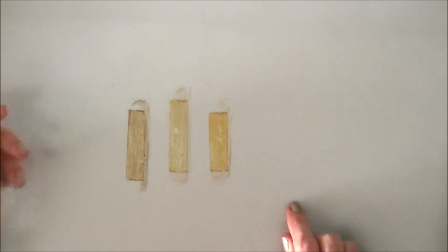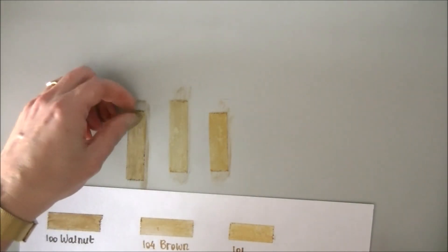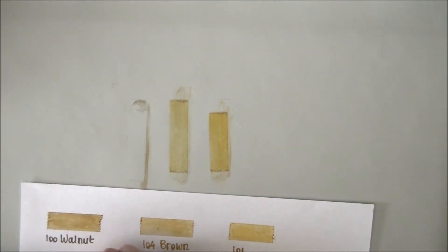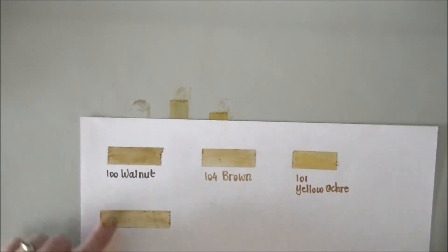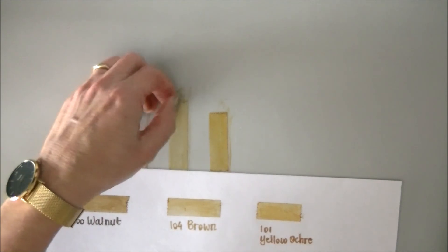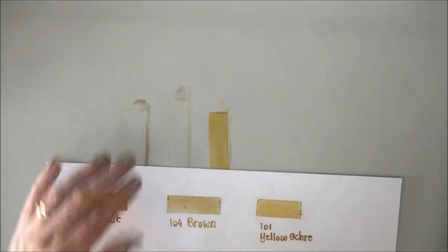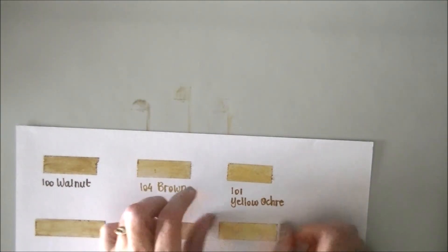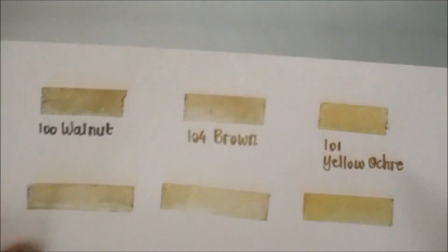So now I'm going to adhere them to my paper so you can see the result. And I smudged this one a little bit more than I did it the first time. This is the brown one. And the yellow ochre one. And I really love this result.